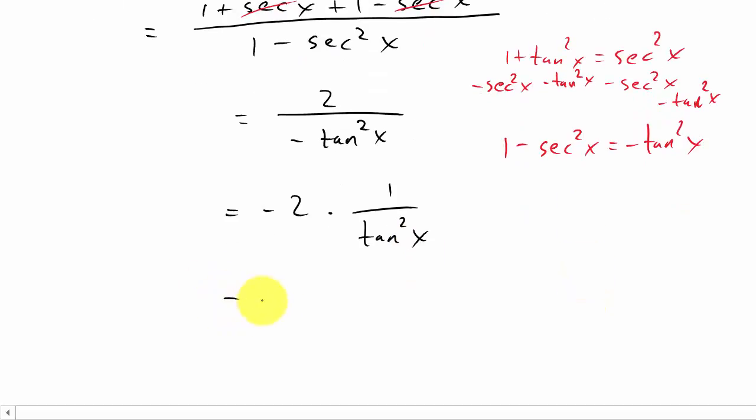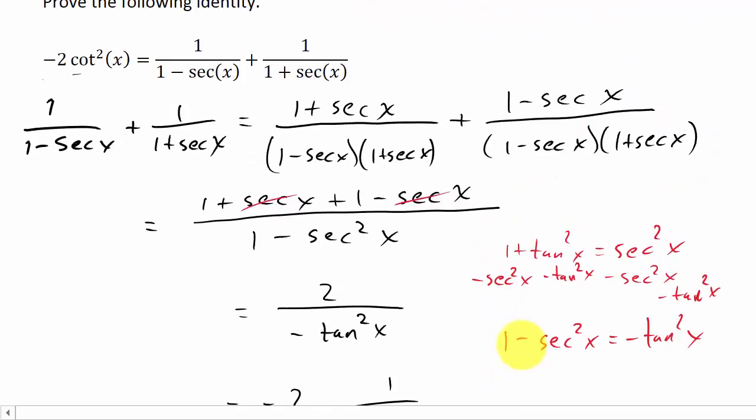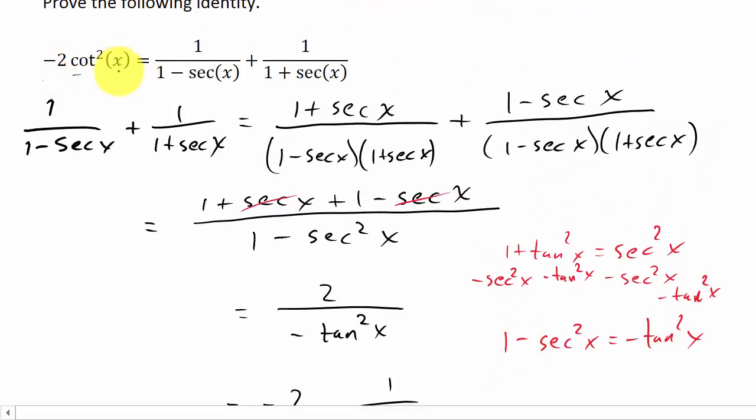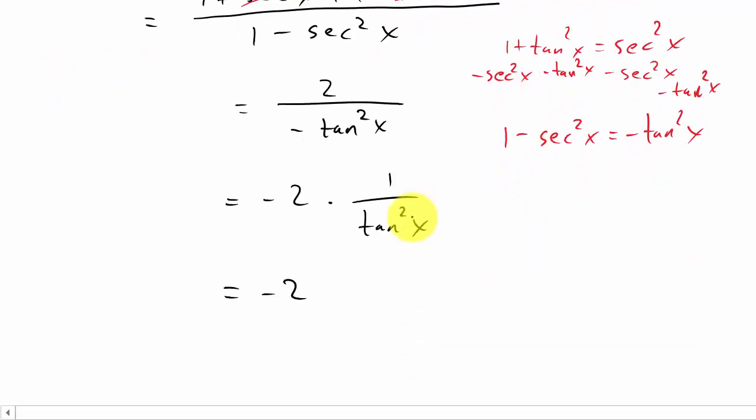Well, that is equal to negative two, and remember what we want, negative two cotangent squared. Well, one over tangent squared is cotangent squared x. And there's the left hand side.